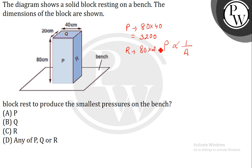If R rests, then we get the area as 80 into 20, which gives us 1600. So the correct answer is option A, P. When P will be resting, we'll get the maximum area, which will give us the smallest pressure. Thank you.